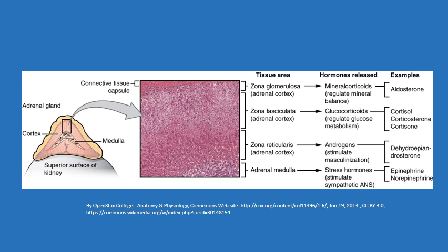The middle part, or the medulla, is where epinephrine and norepinephrine are produced as part of the sympathetic fight-or-flight response. That tissue is considered part of the neurological system — it's not a classical endocrine gland at all. Under sympathetic stimulation, the pre-ganglionic neuron comes into the medulla and stimulates the release of epinephrine and norepinephrine from these modified neurons, and that goes into the blood to coordinate the fight-or-flight response.